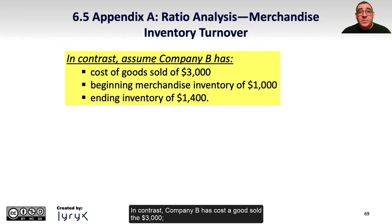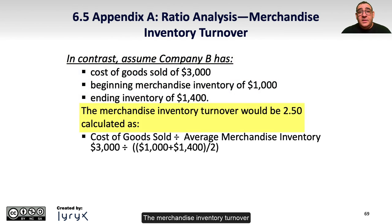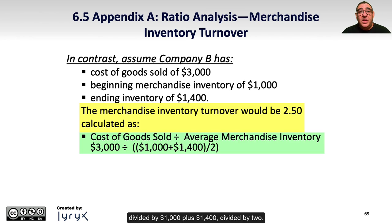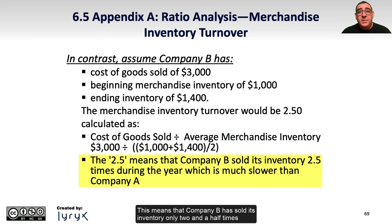In contrast, Company B has cost of goods sold of $3,000, beginning merchandise inventory of $1,000, and ending inventory of $1,400. The merchandise inventory turnover for Company B would be 2.5 times, calculated as cost of goods sold divided by average merchandise inventory, or $3,000 divided by ($1,000 plus $1,400) divided by two. This means that Company B has sold its inventory only two and a half times during the year, which is much slower than Company A.